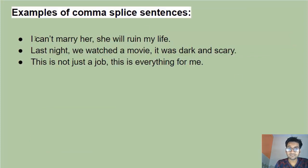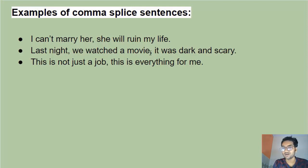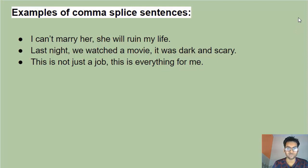More examples: 'I cannot marry her, she will ruin my life' — two sentences joined by a comma, a mistake. 'Last night we watched a movie, it was dark and scary' — again two sentences added using a comma. And 'This is not just a job, this is everything for me' — two independent clauses joined incorrectly with a comma. Now you know what a comma splice looks like.